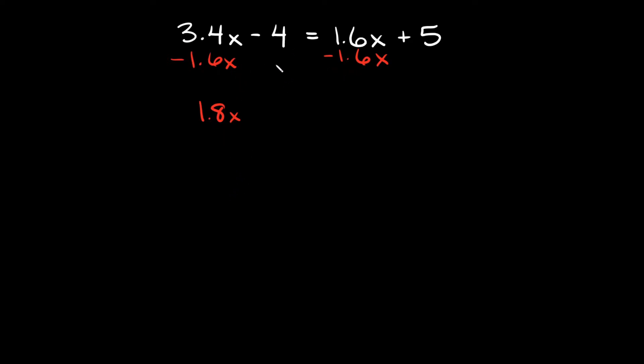So let's bring down the rest of our problem here. We have this minus 4 and then that's equal to 1.6x minus 1.6x. That just goes to 0, so we're just left with this positive 5.